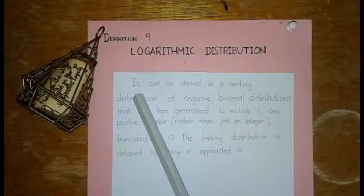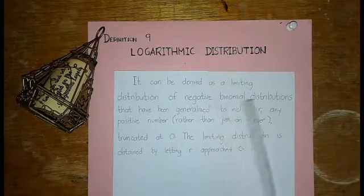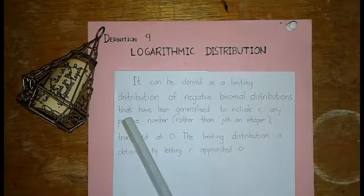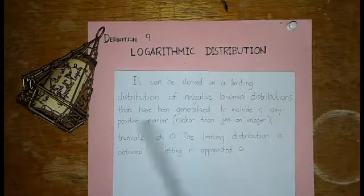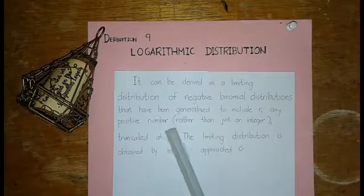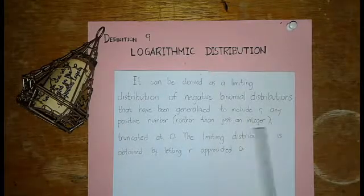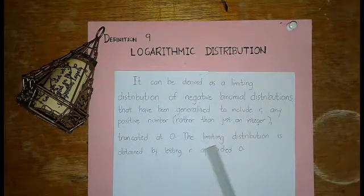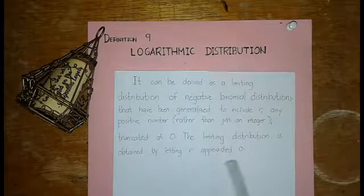It can be derived as a limiting distribution of negative binomial distributions that have been generalized to include r as any positive number rather than just an integer, truncated at 0. The limiting distribution is obtained by letting r approach 0.